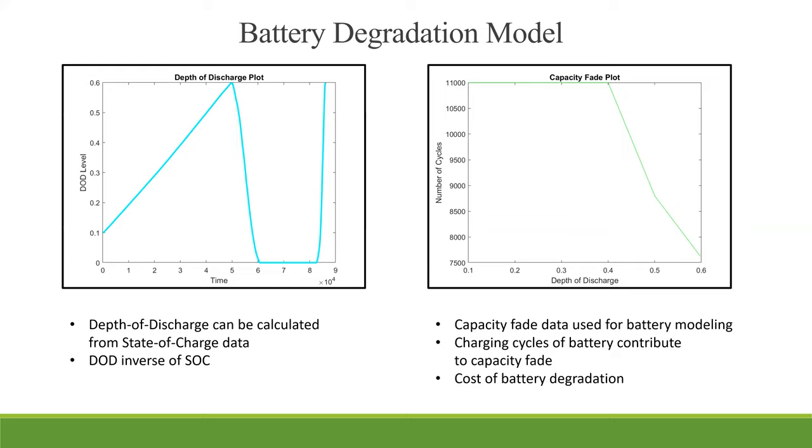Using data obtained from a Trojan battery data sheet, we were able to construct a capacity fade block. We used the number of cycles to failure and related it to the depth of discharge of the battery. This was used to determine a lifetime throughput of the battery, which was then useful for determining cost of the battery degradation.